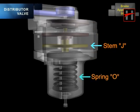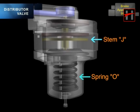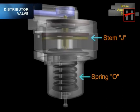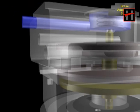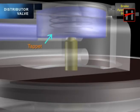...the spring force of the spring O lifts the stem J upwards, due to which connection between inlet port B to outlet port A becomes open via the tap.